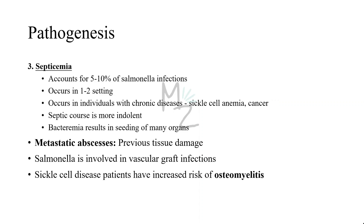The third disease is septicemia. It accounts for only about 5–10% of Salmonella infections and occurs in one of two settings: a patient with an underlying chronic disease such as sickle cell anemia or cancer, or a child with enterocolitis. Bacteremia results in seeding of many organs, with osteomyelitis, pneumonia, and meningitis as the most common sequelae. Osteomyelitis in a child with sickle cell anemia is an important example. Previously damaged tissues such as infarcts and aneurysms — especially aortic aneurysms — are the most frequent sites of metastatic abscesses. Salmonella are also an important cause of vascular graft infections.